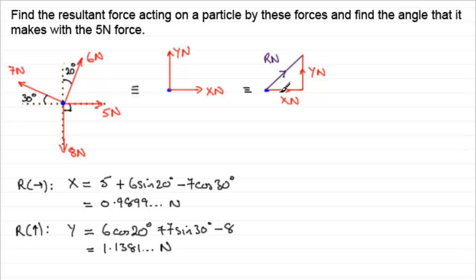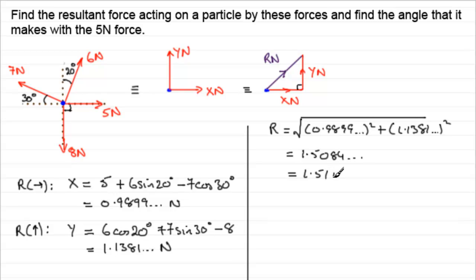So to get r newtons all I need to do is use Pythagorean theorem because this is a right angle triangle. So using Pythagorean theorem, we've got that r will equal the square root then of the sum of the squares of those two sides, x squared plus y squared. So we've got 0.9899 and so on squared plus the y value squared, that is 1.1381 and so on squared. If you work all of that out on your calculator, you should end up with 1.5084 and so on. And if you round that to three significant figures, then you're going to get 1.51 newtons to 3SF.